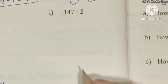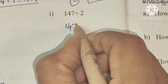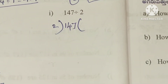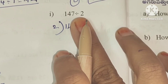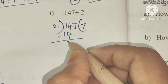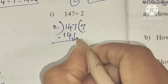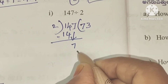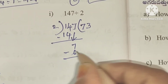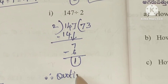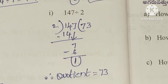Last problem. I: 147 divided by 2. First number 1 is smaller than 2, so we take two digits: 14. 2 sevens are 14, after subtraction 0 remains. Next number 7 comes down: 2 threes are 6, after subtraction remainder 1. So quotient is 73, remainder is 1.